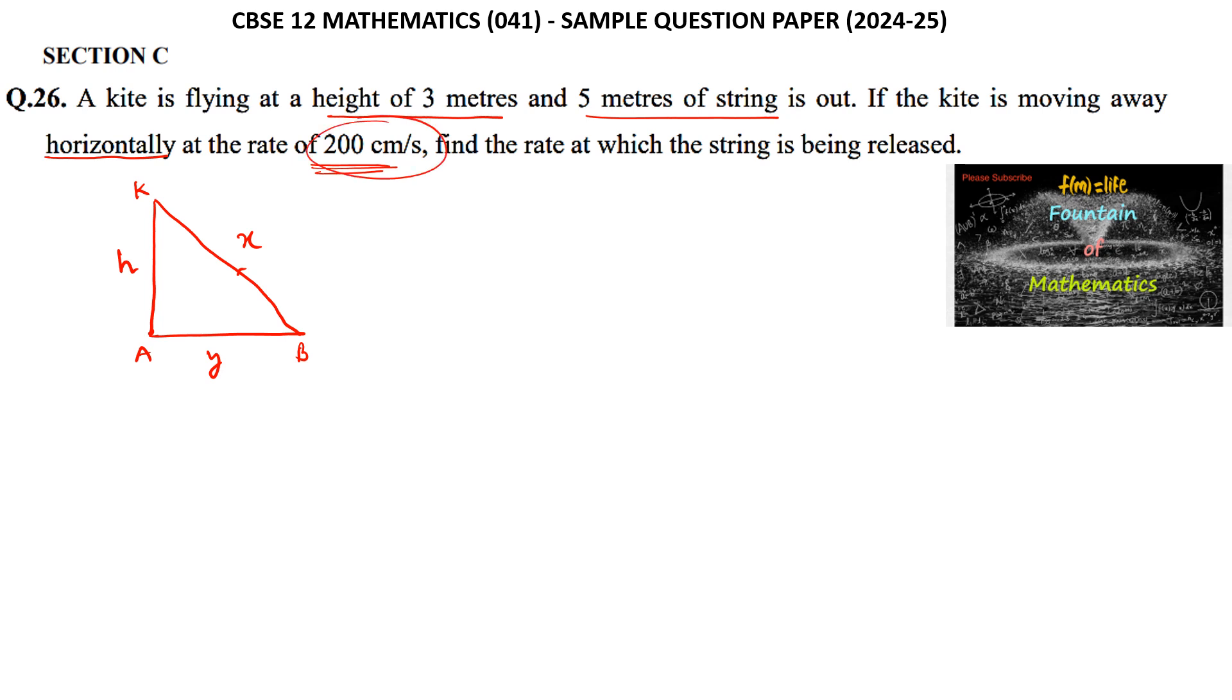It is given that the kite moves horizontally at 200 centimeters per second, which is parallel to the base, so dY/dt = 200 cm/s. Also given: H = 3 meters (fixed), and 5 meters of string is out means X = 5.